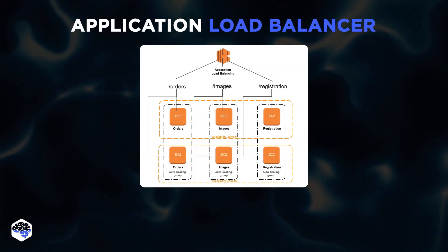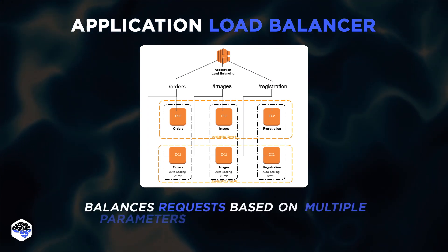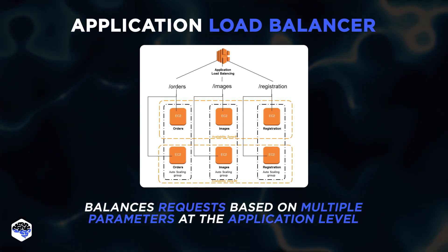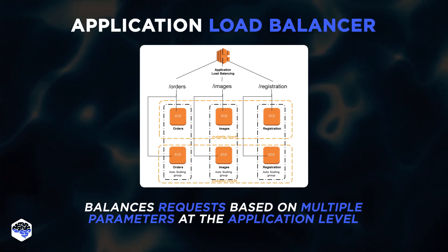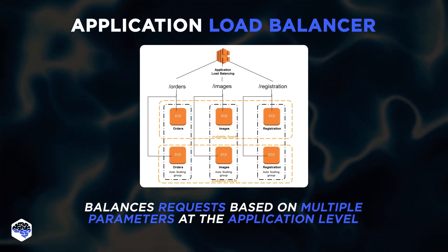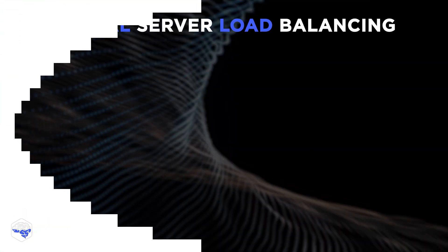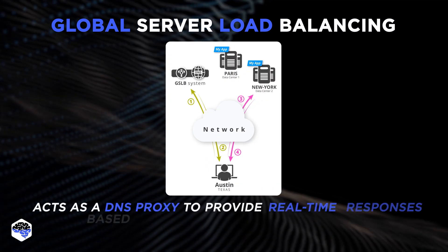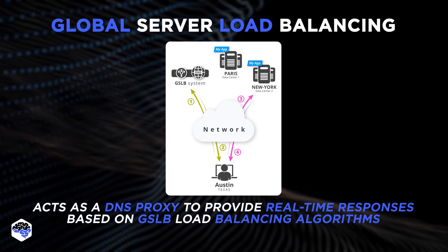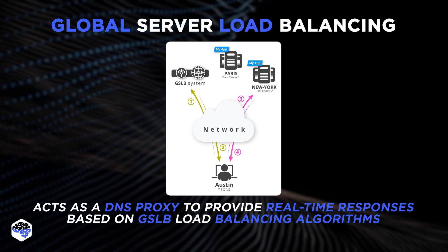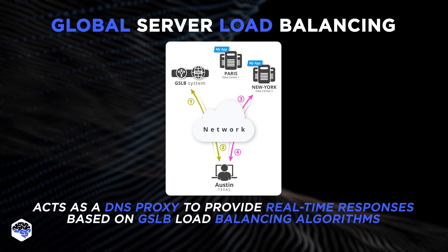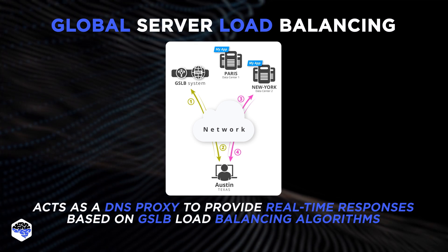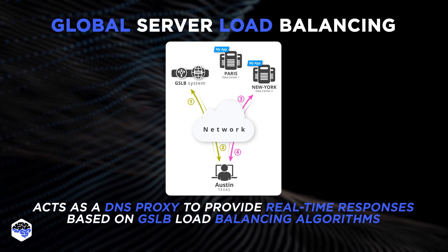The Application Load Balancer, L7, balances requests based on multiple parameters at the application level and controls server traffic based on individual usage and behavior. Global Server Load Balancing is DNS-based and acts as a DNS proxy to provide real-time responses based on GSLB load balancing algorithms. It expands the capabilities of the common L4 and L7 layers in various data centers.